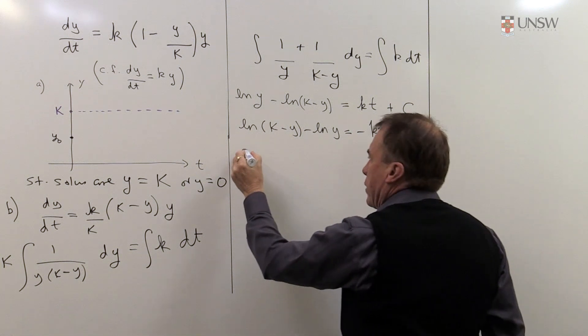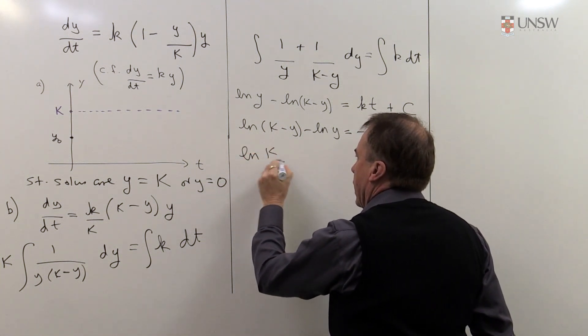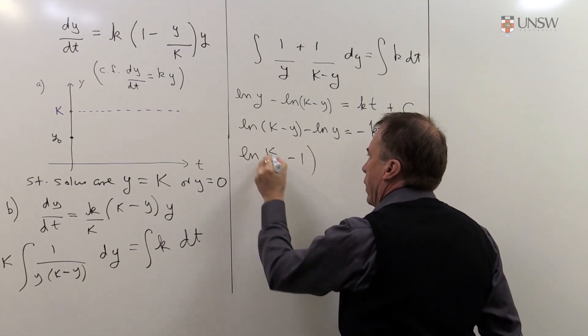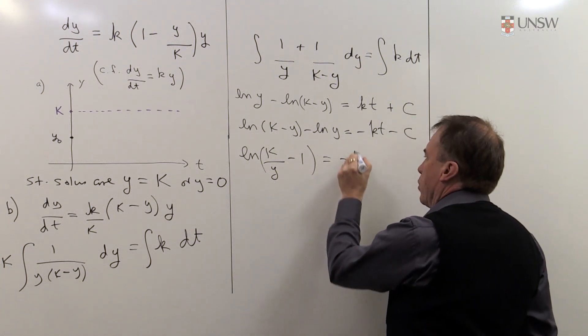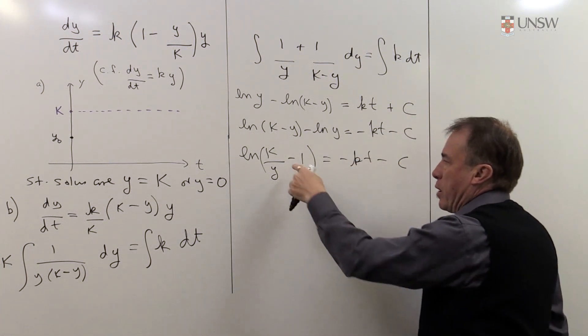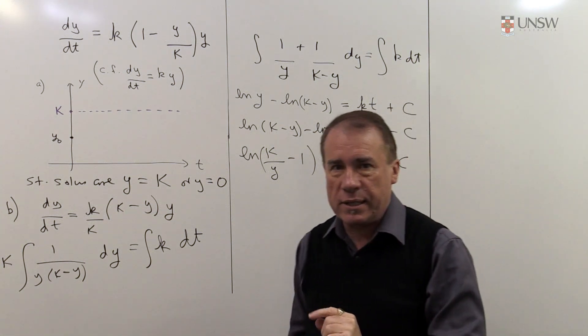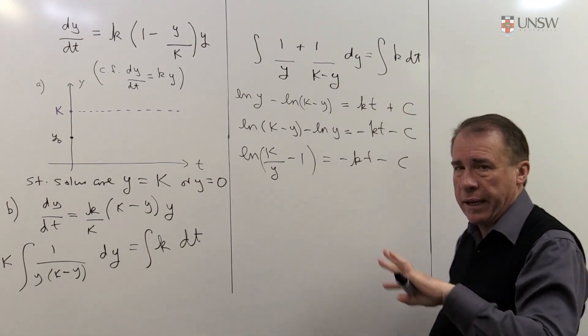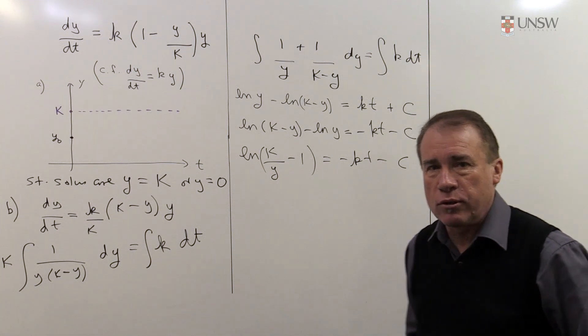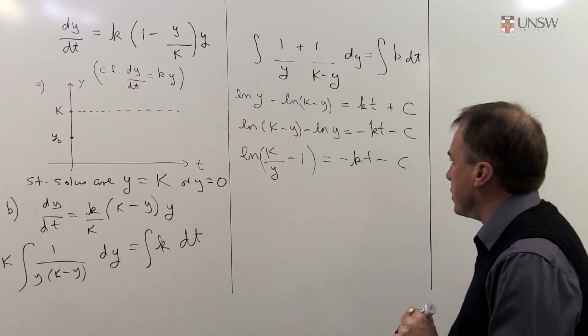And now when I divide them, I'm going to get log of k over y minus 1. And you see, the point I was making is that you only get one single y. It just makes the algebra easier. Always look ahead in maths in the algebra, see if you can do something that will make it simple.